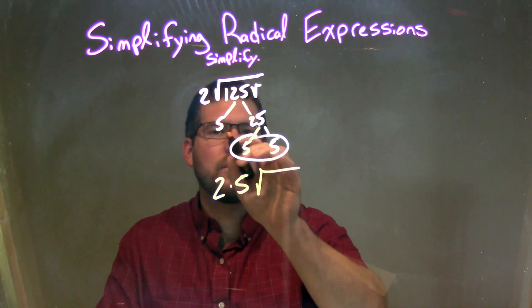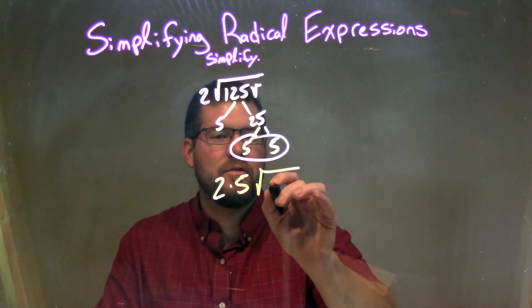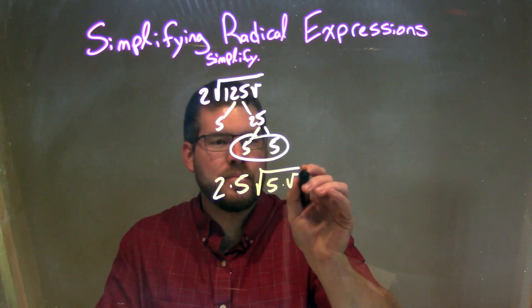Times the square root of what's left on the inside, which is just 5 and then V, 5 times V.